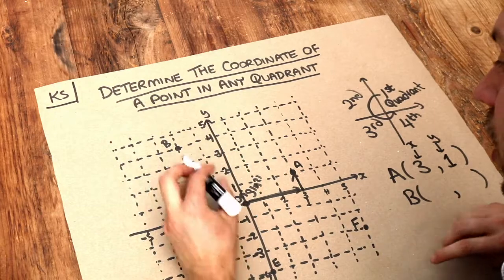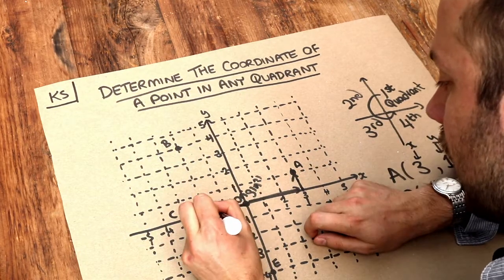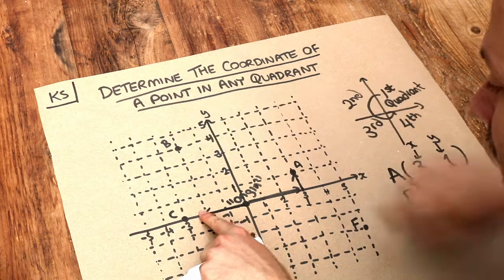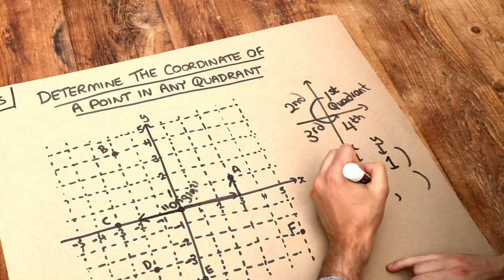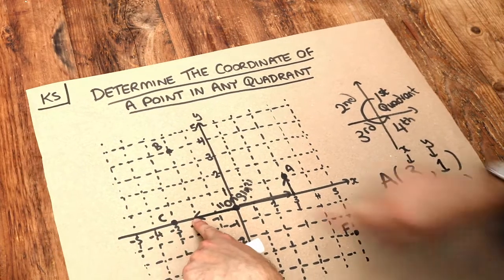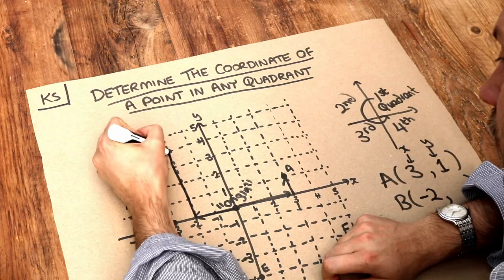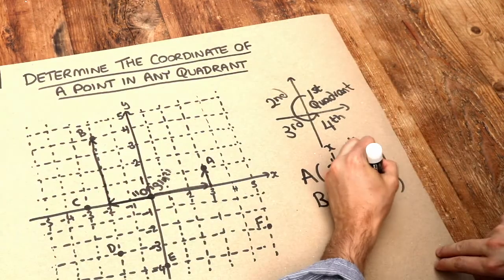What about B? Well, can you see in the x-direction, we have to go two to the left to get under B. So that's minus two. And then how far do we have to go up the y-axis in the y-direction? We can see we have to go up four, so the y-value is four.